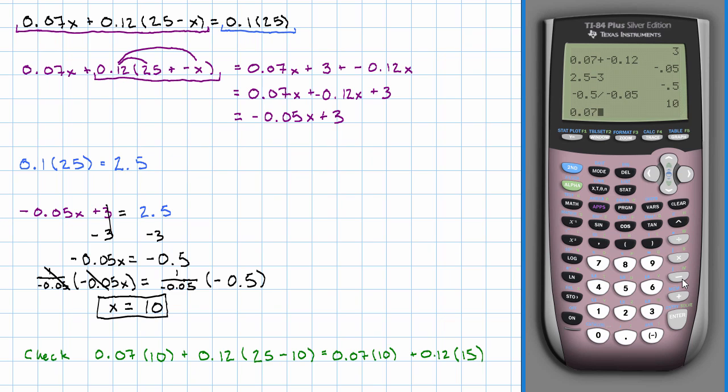0.07 times 10 plus 0.12 times 15. And I really do get 2.5.